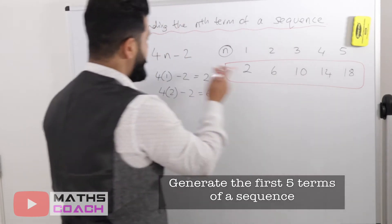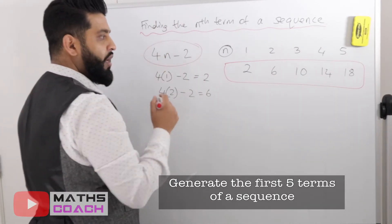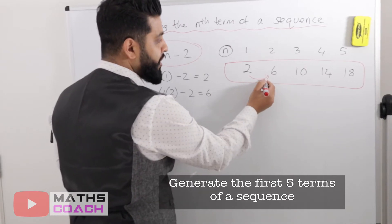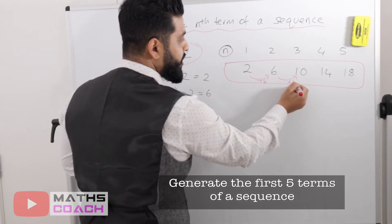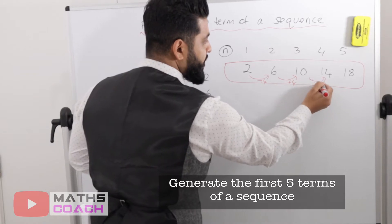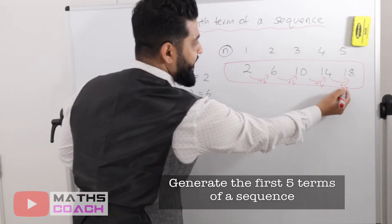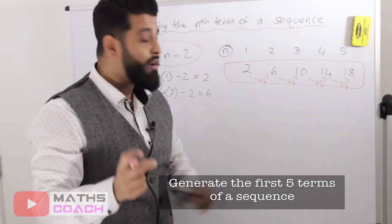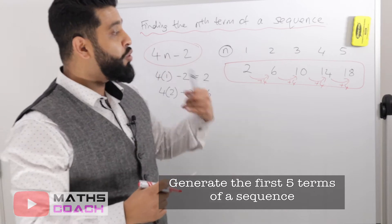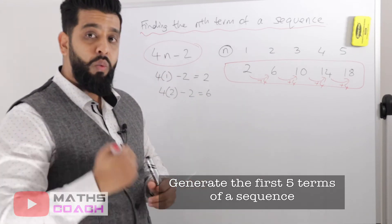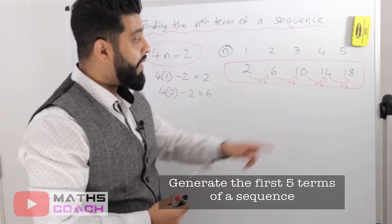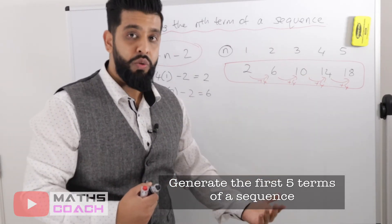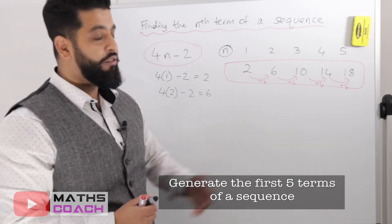Now, if you look back at our sequence — 2, 6, 10, 14, 18 — you may notice a pattern is emerging. The difference between each term is plus 4. So without substituting into the formula, you can work out the next terms: the sixth term will be 18 plus 4, which is 22. You just keep adding 4.